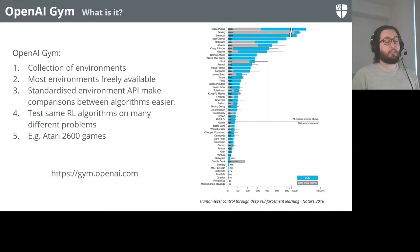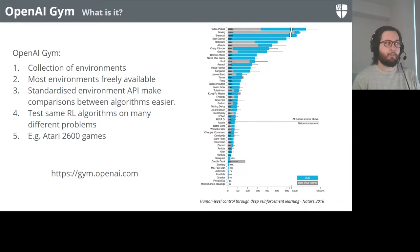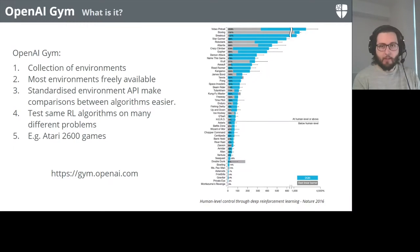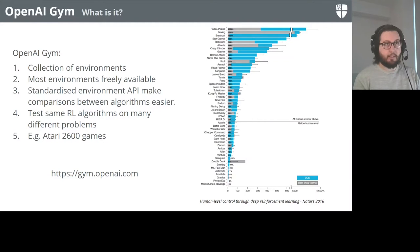OpenAI Gym was created to answer the question of how do we compare different reinforcement learning algorithms? It's really difficult to replicate results if you're working on different implementations of the same environment, due to problems with randomness and sampling. The whole point is that these environments all have the same common standardized API - the same methods, described in an easy way, which makes it easy to write generalized code that works across different environments.